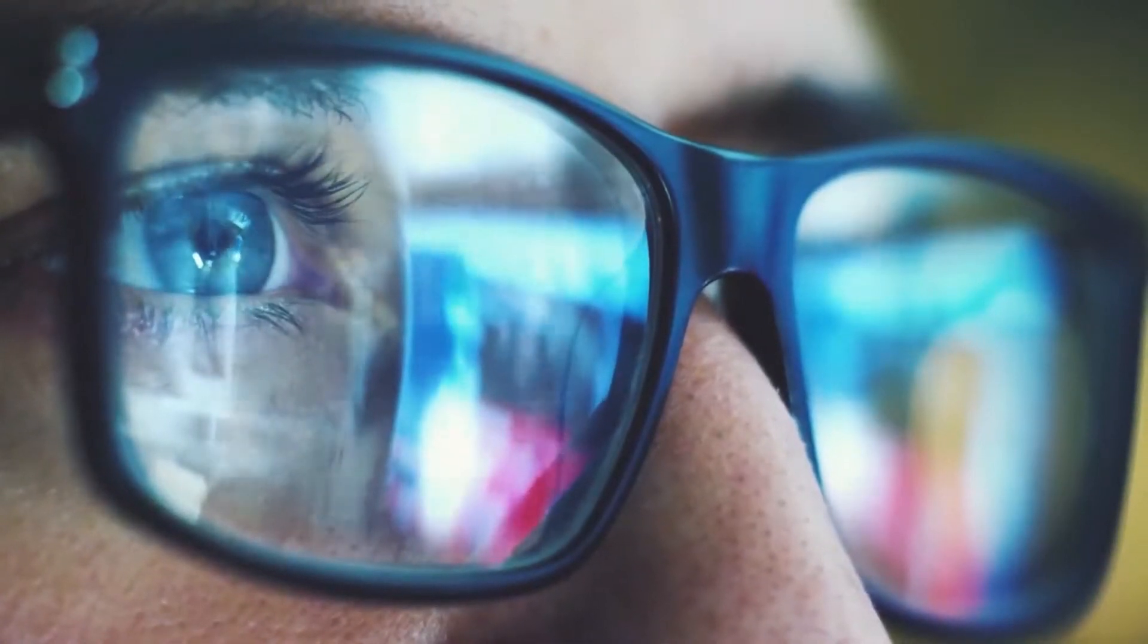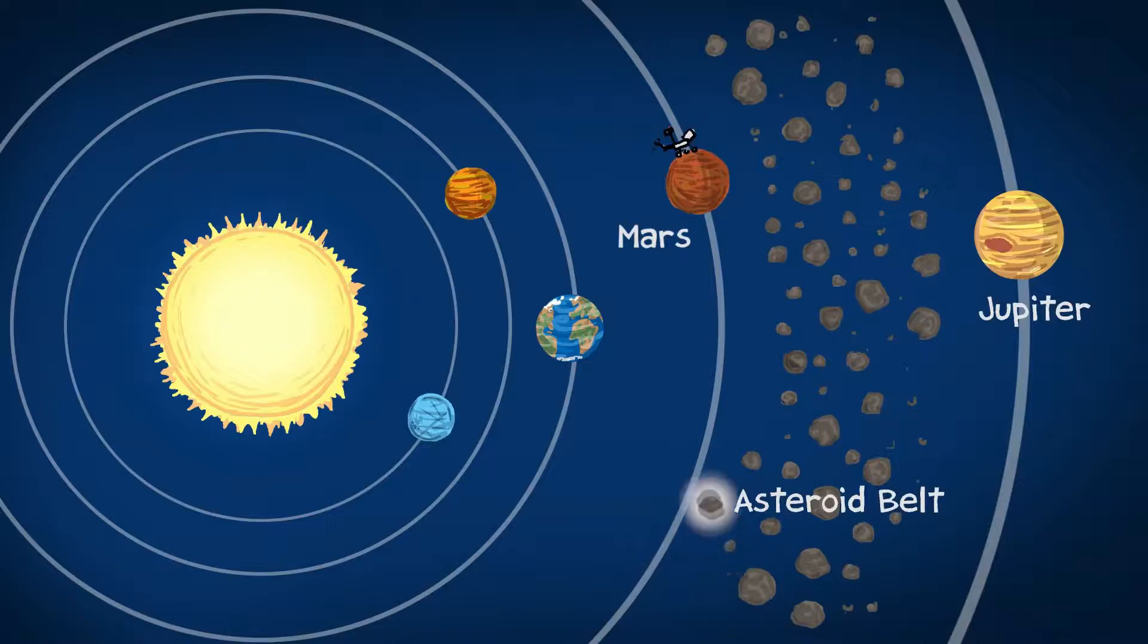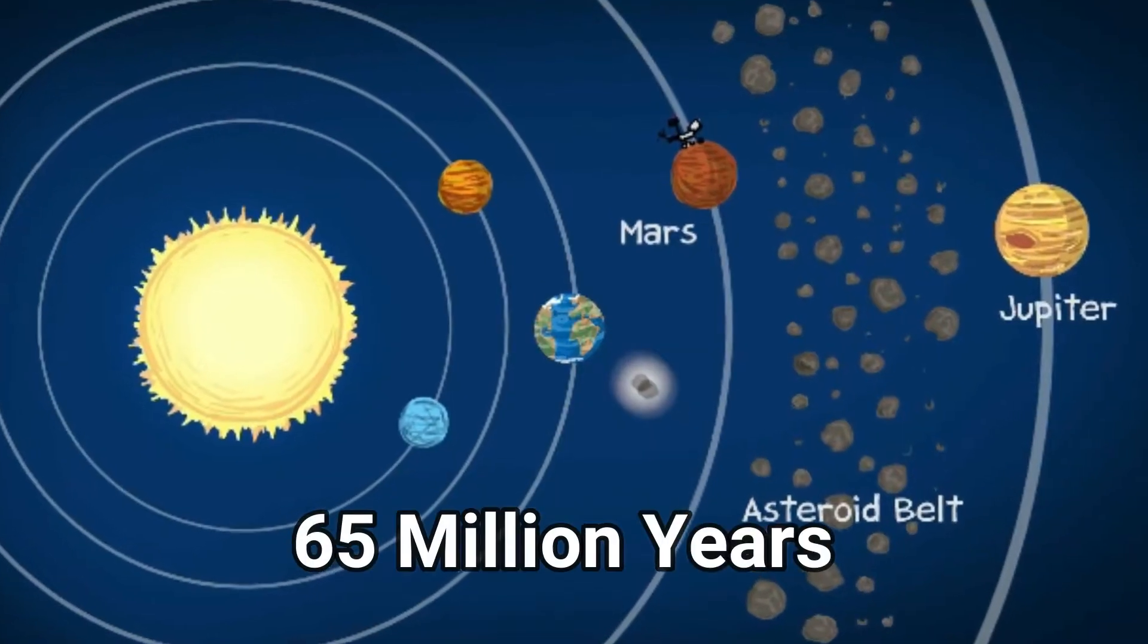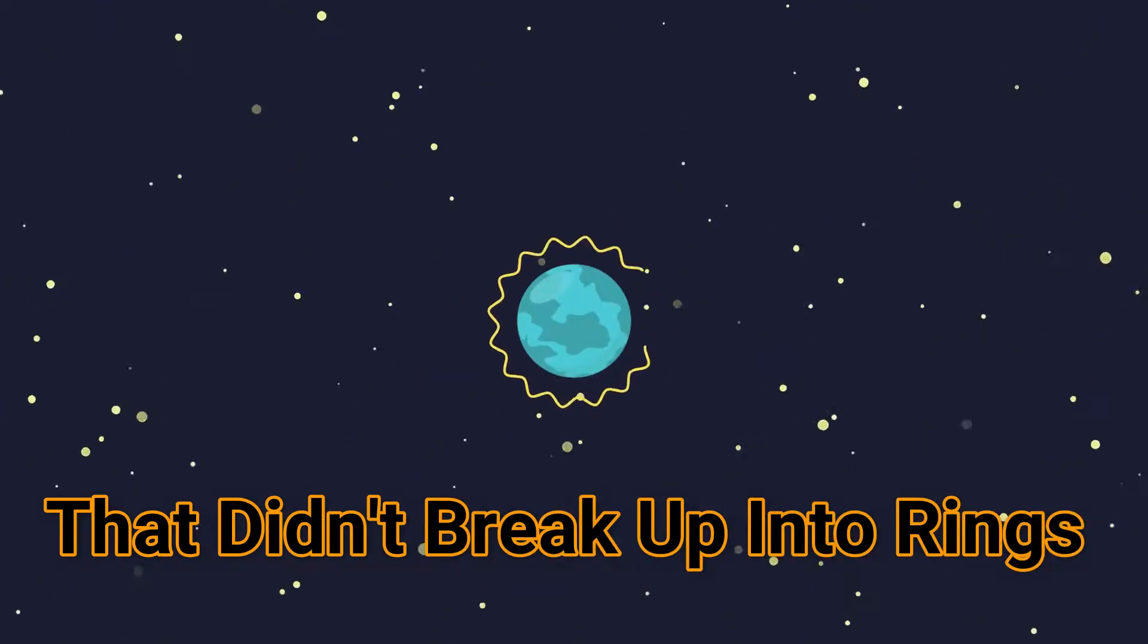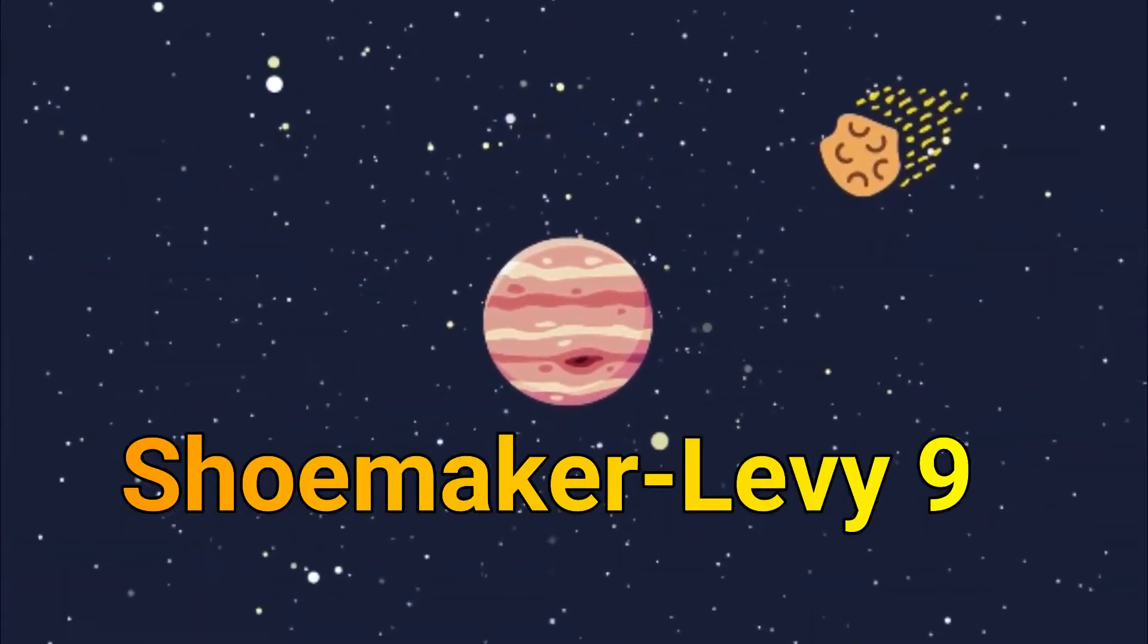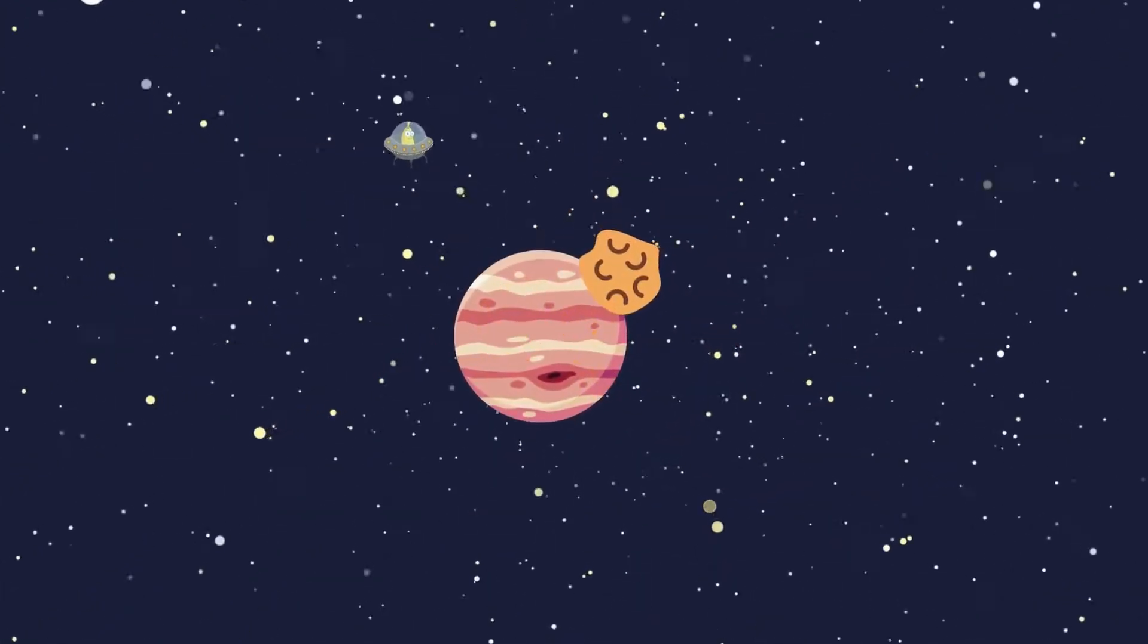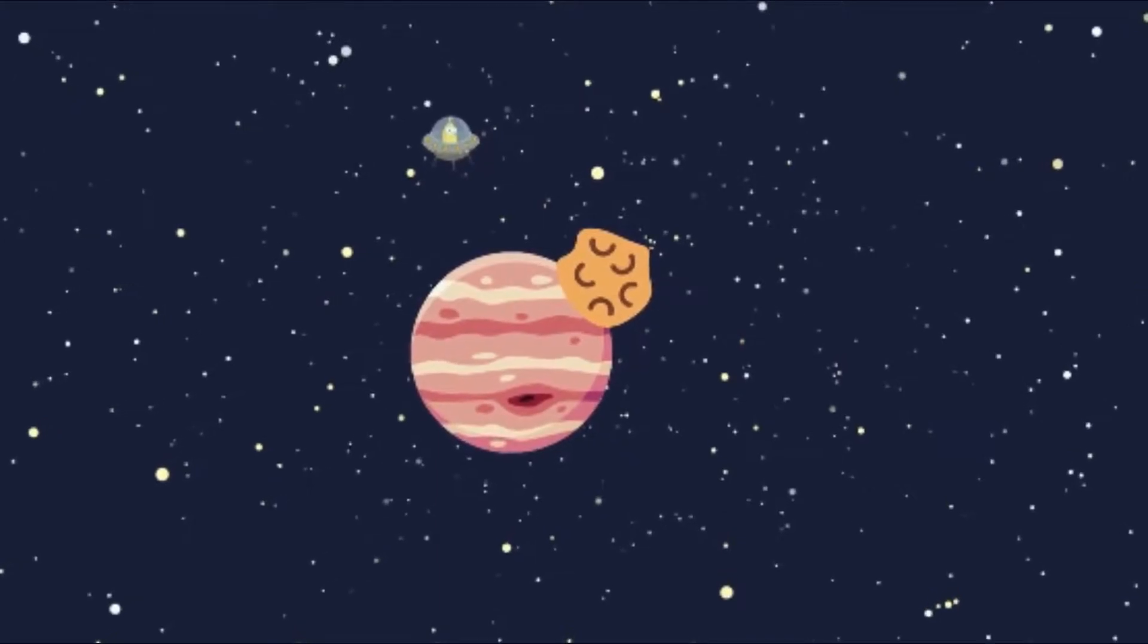Now you might be thinking that there is more to the story here. After all, Earth was hit by a meteorite 65 million years ago that killed the dinosaurs. That didn't break up into rings. Also, there was comet Shoemaker-Levy 9 smashing into Jupiter in 1994, which also didn't form rings. Actually, there are two factors at play here.